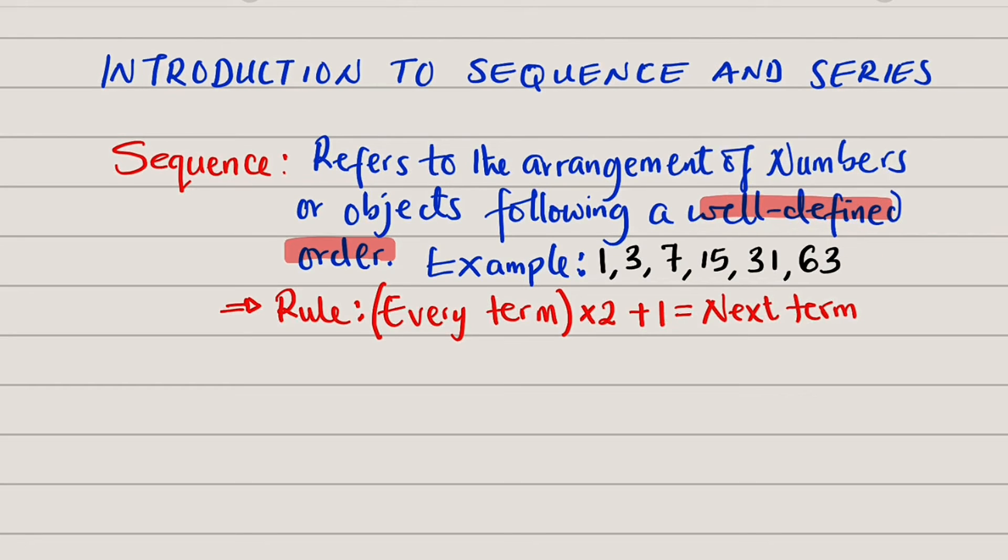Let us use this example to explain this statement well-defined. The numbers given to us are 1, 3, 7, 15, 31, and 63. But look at this statement here. It says that every member you take here, you multiply by 2, and you add 1 to the result, you shall obtain the subsequent term. That is the next term.